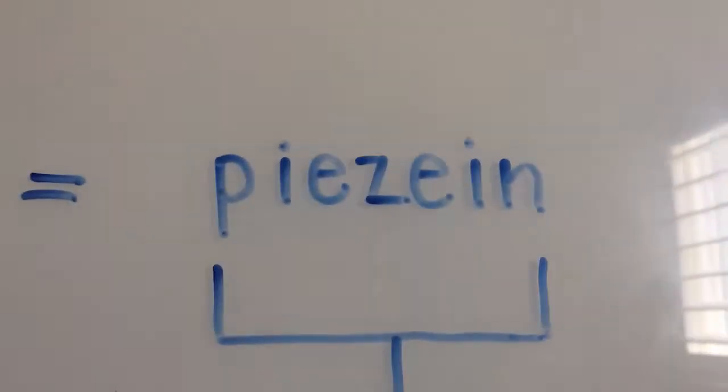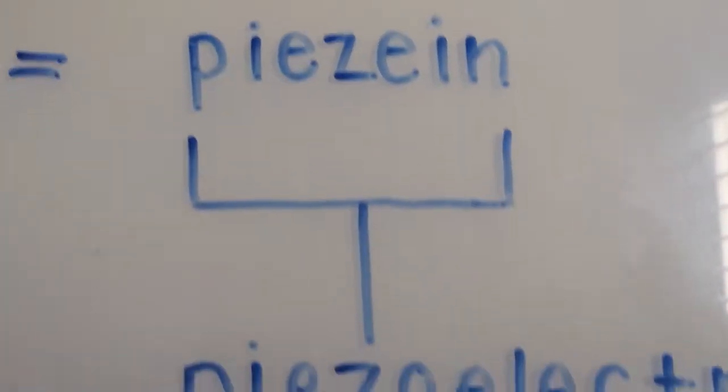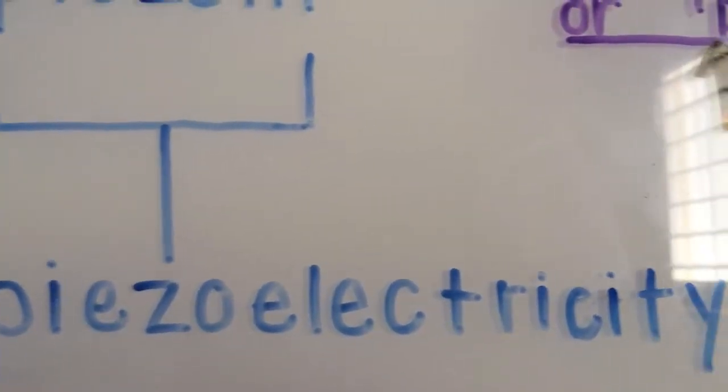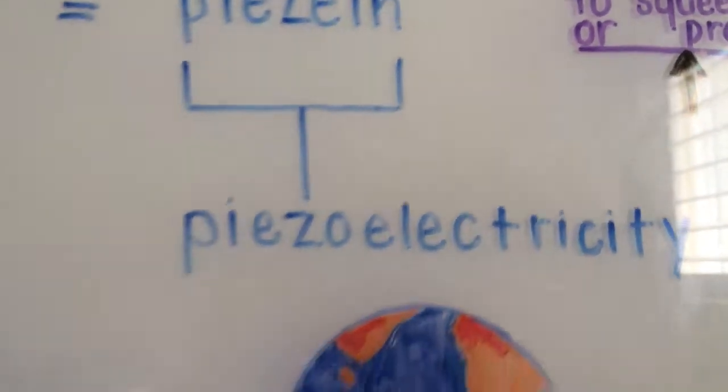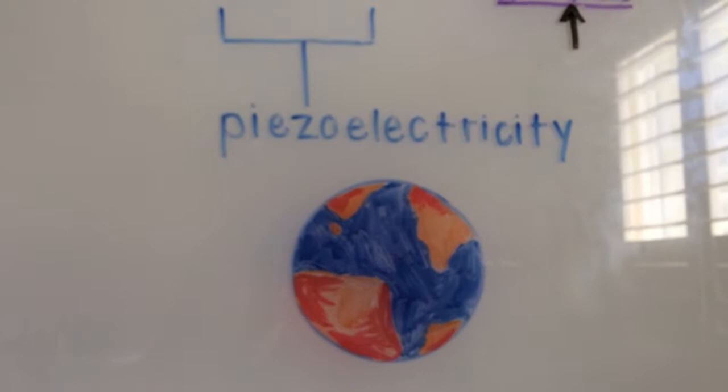Pisian is a word that's found in piezoelectricity. Piezoelectricity is electrical energy generated by applying mechanical pressure on certain common solid materials found globally, such as crystals and some ceramics.